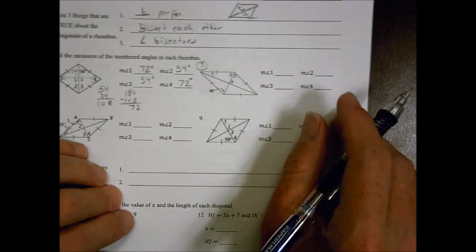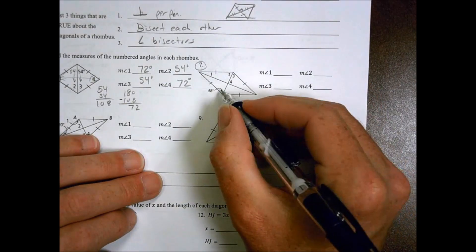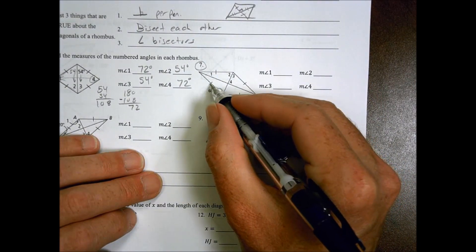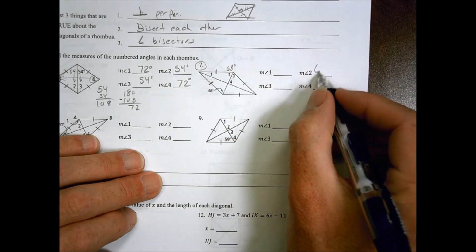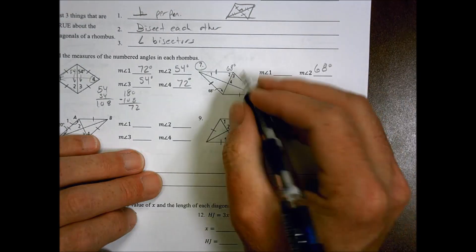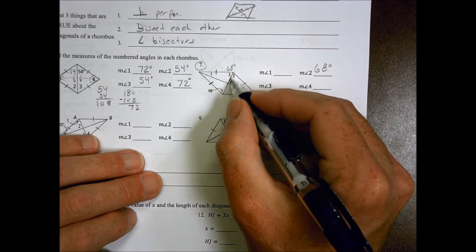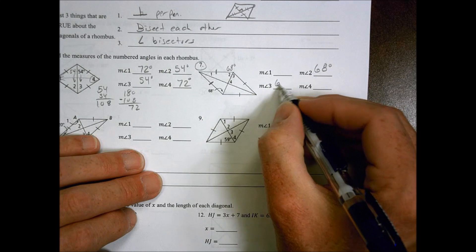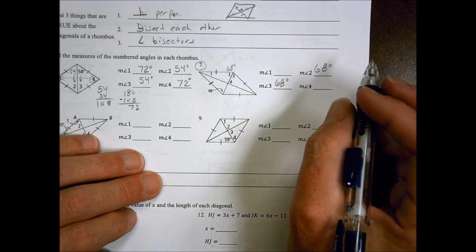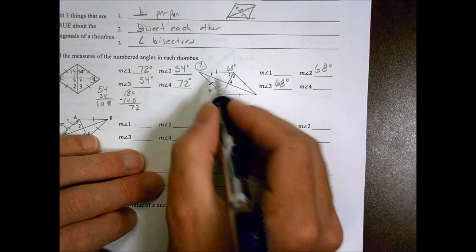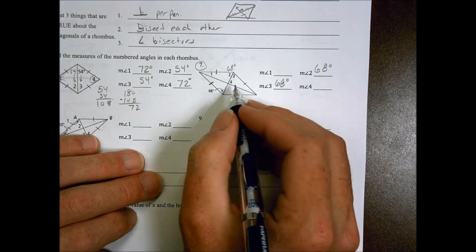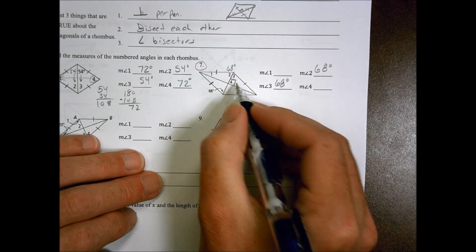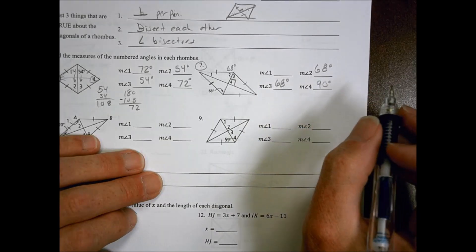Looking at number 7, if I have a 68 here, again it's an isosceles triangle with those marks right there, that makes angle 2 also 68 degrees. And if angle 2 is 68, this is an angle bisector right there, that makes angle 3 also 68 degrees. Because these are two diagonal lines going across the rhombus, that makes angle 4 equal to 90 degrees because it's perpendicular.